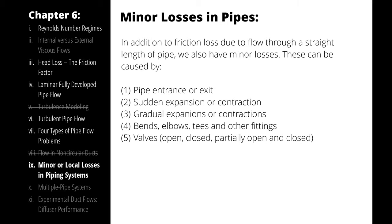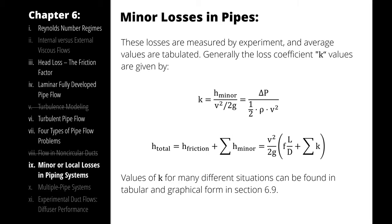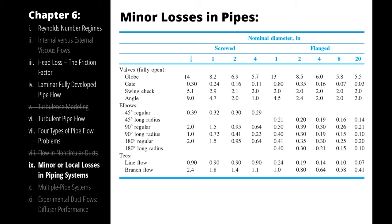These minor losses are referred to by what we call their minor loss coefficient, represented here with the letter K. In practice, you could consult the manufacturer for a published loss coefficient, or determine it yourself with a simple flow test. For our purposes here, we will be using the charts and graphs of general loss coefficients available in section 6.9 of our textbook, which give loss coefficients based on some of the physical characteristics of the fitting in question.